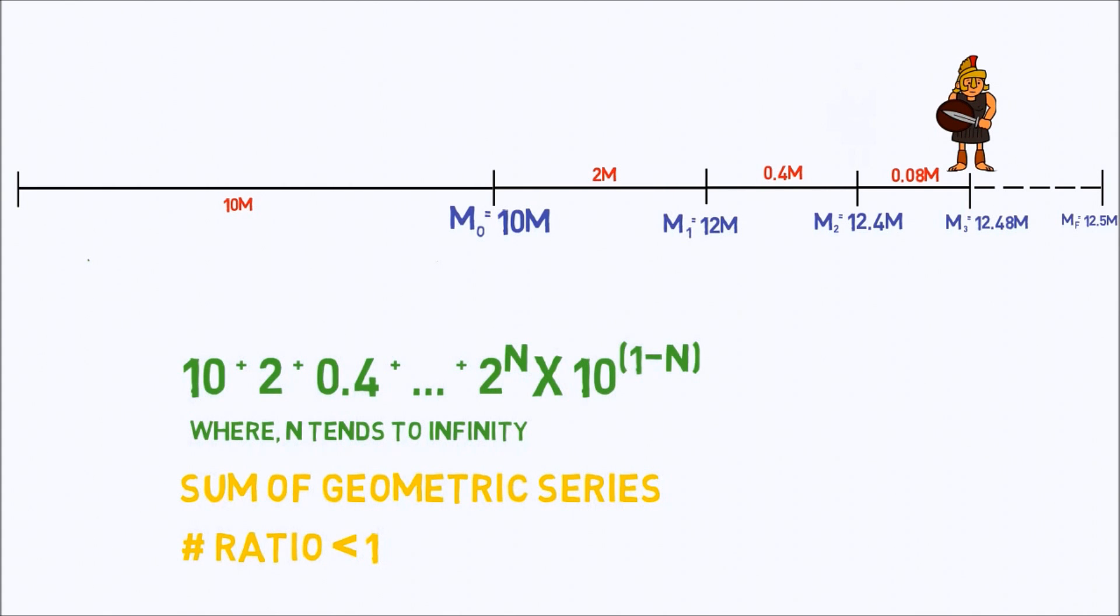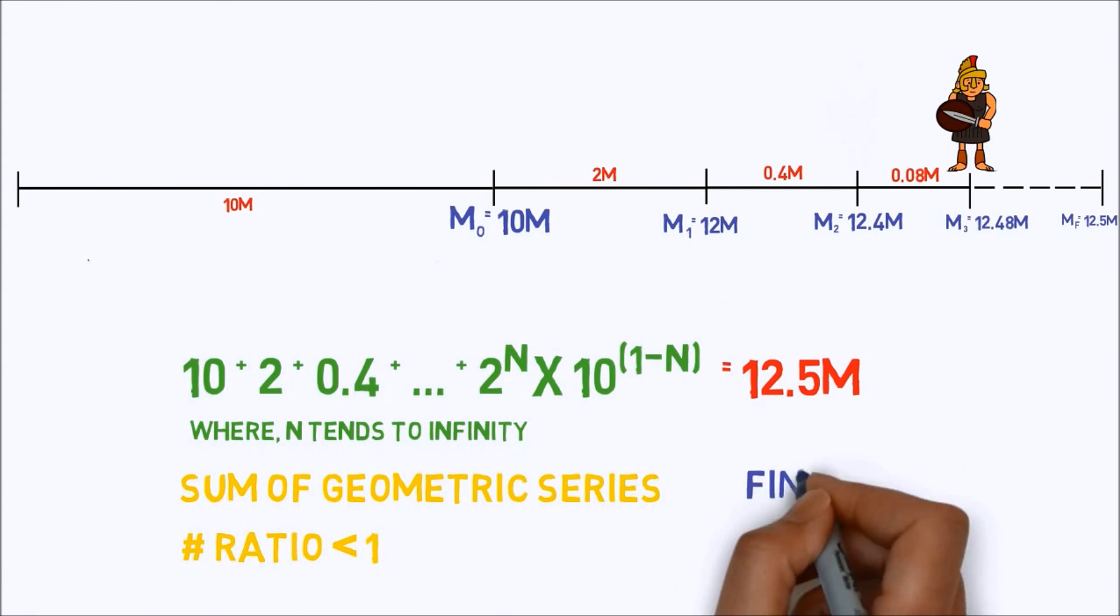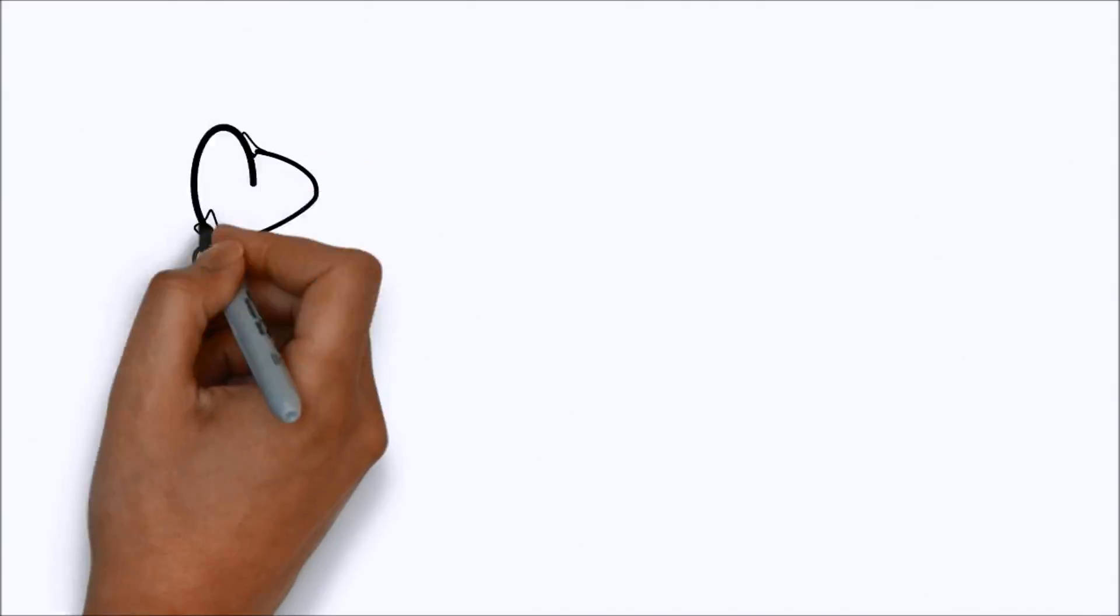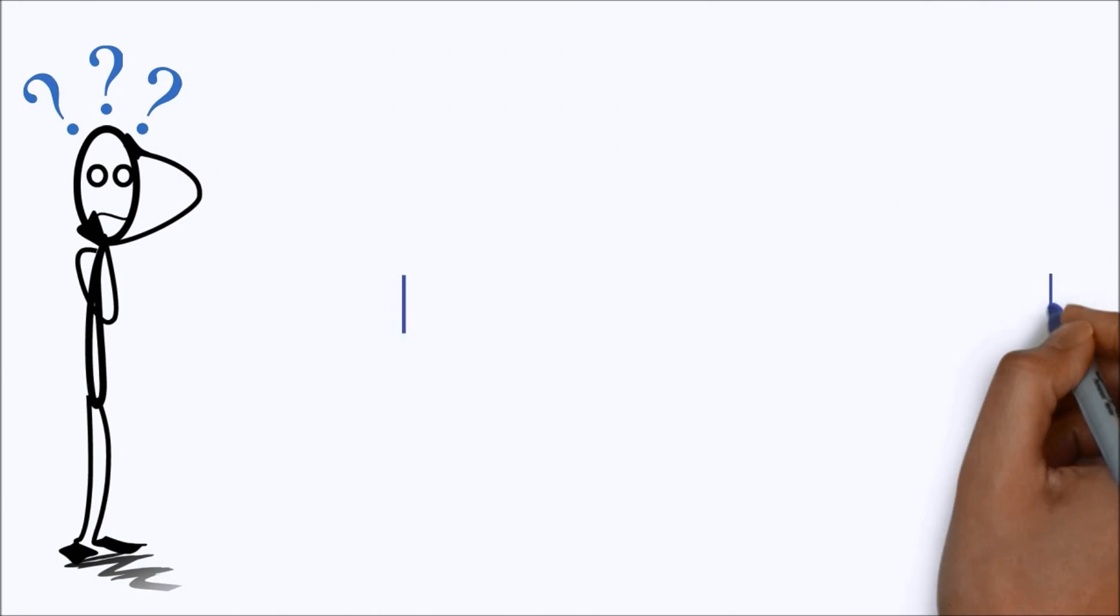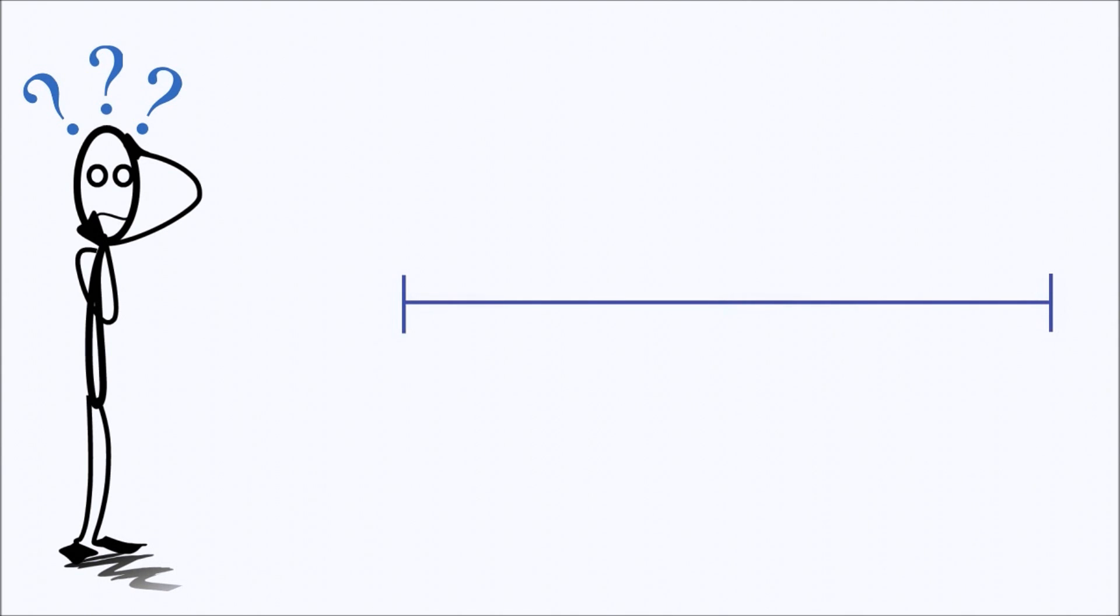And as he only has to travel a finite distance, Achilles will obviously cover that distance in a finite time if he is traveling at a constant speed. So how did Zeno manage to confuse us? By dividing the racetrack into an infinite number of pieces, with each step decreasing, Zeno's argument turned the race into an infinite number of steps, so that we can never reach the moment where Achilles passes the tortoise.